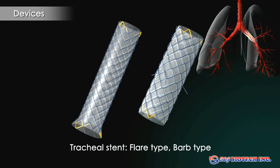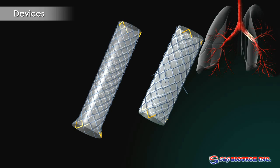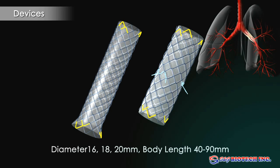The tracheal stent is available in flare type and barb type. Diameters are 16, 18, and 20 mm. Body length ranges from 40 to 90 mm.